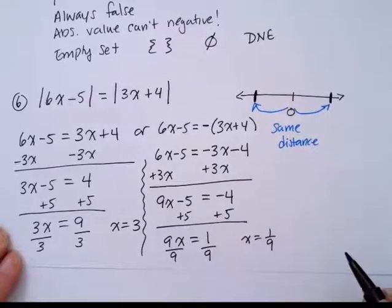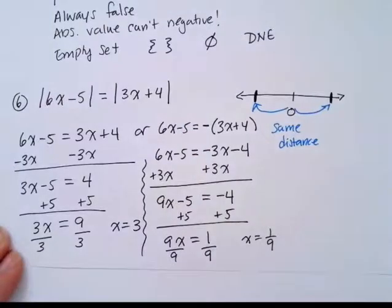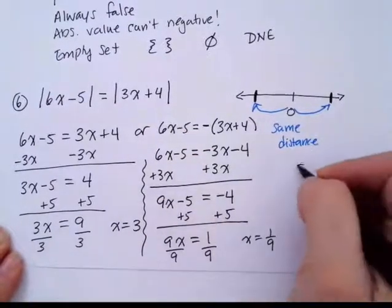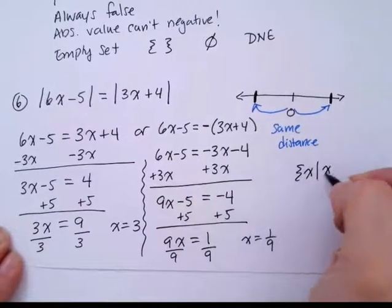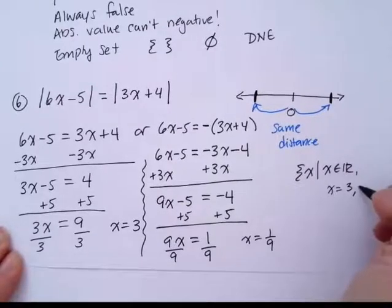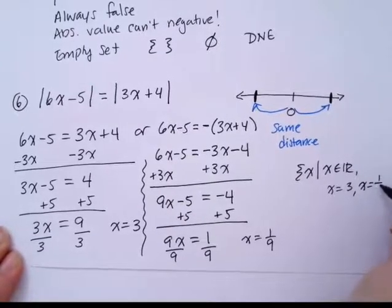So there are two values that would make this original equation true. Either x is equal to 3, or x is equal to 1 ninth.